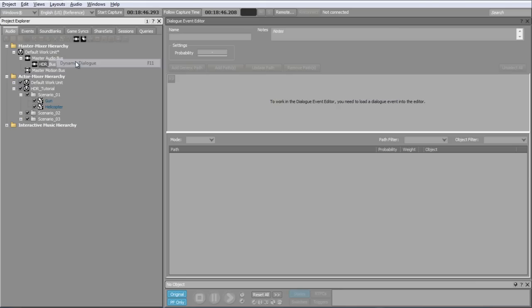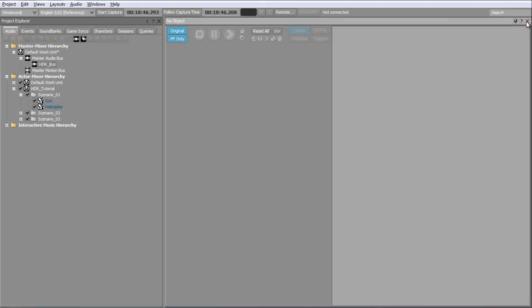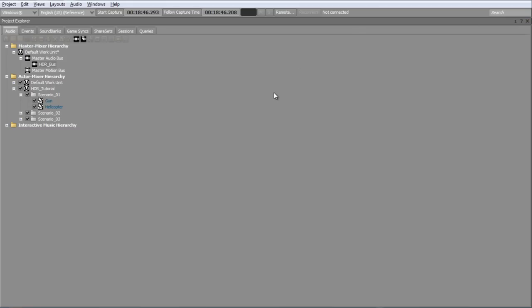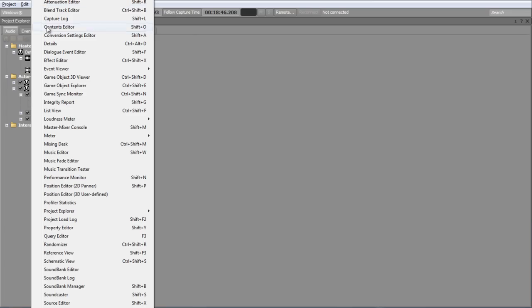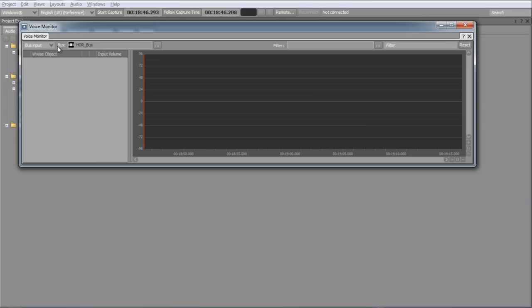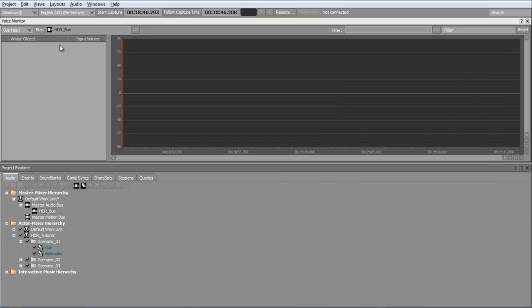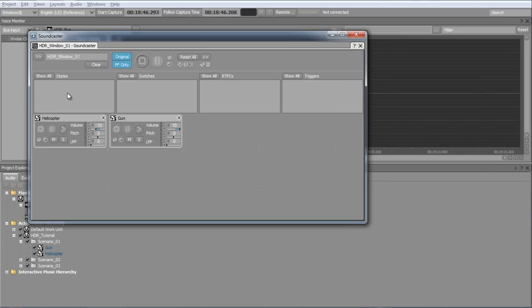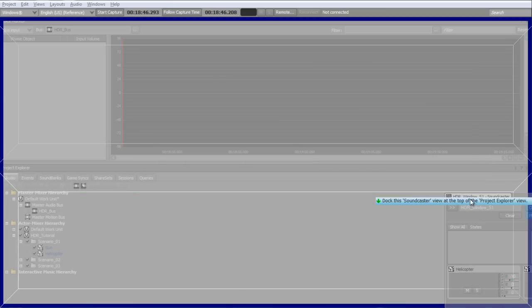To work efficiently with HDR, we suggest that you customize a layout by removing unnecessary views and adding more relevant views for the task. At any moment, you can go back to the factory layouts by using the Reset Factory Layouts option in the Layouts menu.